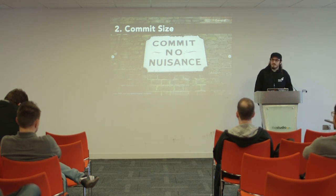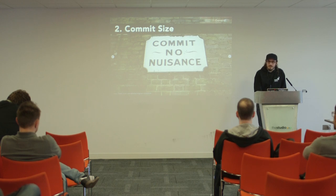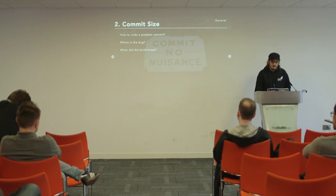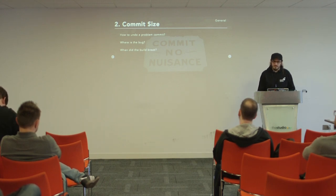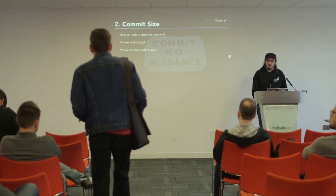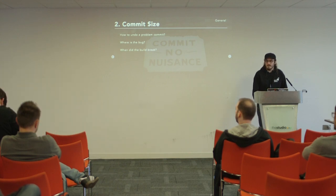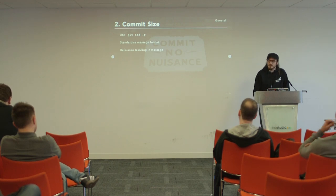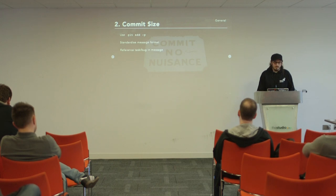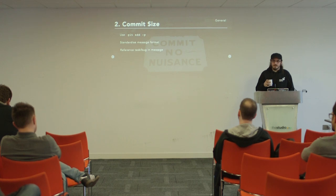The second point is version control: commit size and commit messages. If too much is included in a single commit, you can't undo part of it — you have to undo the whole thing. If you've done one commit at the end of the day covering five different issues, and something goes wrong, it could have broken at any point. Use 'git add -p' to go through diffs in your files and selectively stage sections, keeping commits well-separated per issue.